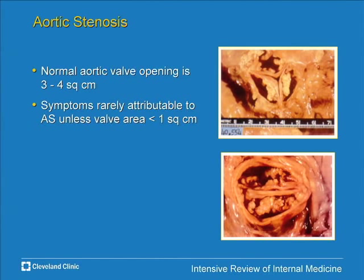There are two main causes of aortic stenosis. First is the tricuspid degenerative valve — not just wear and tear, but a process we've learned is similar to atherosclerosis. It occurs in about 4% of those over age 80, with calcium laid down on the body of the cusps. Bicuspid valve is the other common cause — degenerative changes aggravated by the abnormal valve. Bicuspid patients tend to present in their 50s or 60s; degenerative tricuspid patients in their 70s, 80s, and 90s.